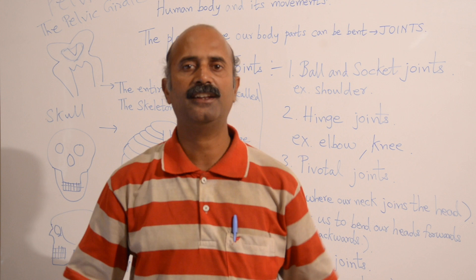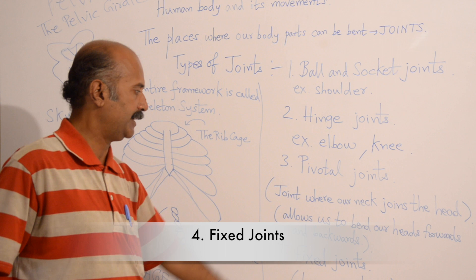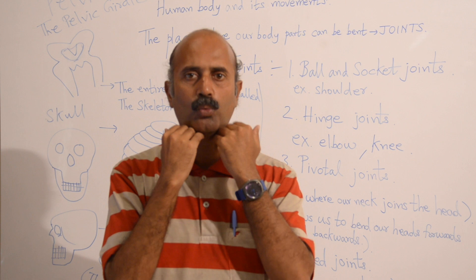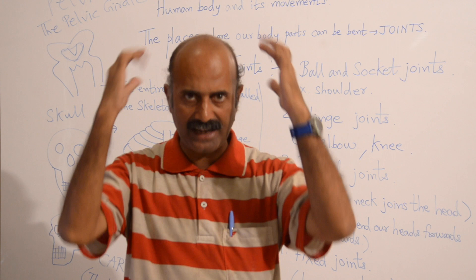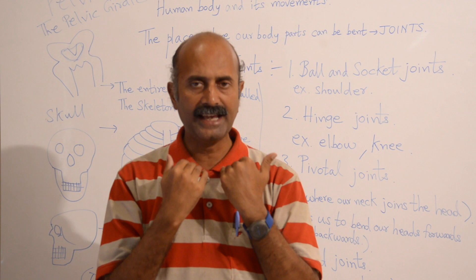Then we come to fixed joints. We have a skull made of 20 bones; however, there is only one joint we can move, which is the lower jaw. The upper jaw is fixed and the lower jaw is the only movable one. So 19 bones are fixed — they are fixed joints.